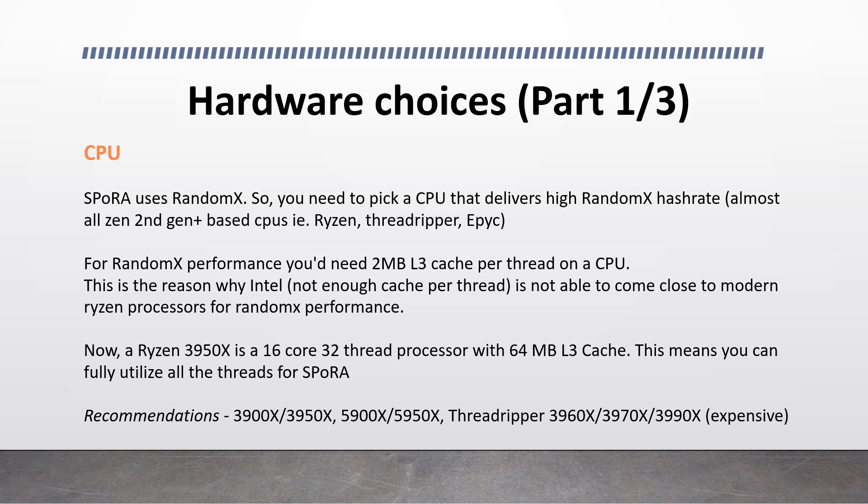For example, the Ryzen 9 3950X is a 16-core, 32-thread processor with 64 megabytes of L3 cache, meaning you can fully utilize all threads for SPORA. My recommendations for RV mining processors are: the 12-core 3900X, the 16-core 3950X, and the Ryzen 5000 series — specifically the 5900X and 5950X — if the 3000 series isn't available. For a higher-end, more expensive platform, the Threadripper 3960X, 3970X, and 3990X are excellent choices. These Threadripper platforms also support a larger amount of weave because they have significantly more PCIe lanes available.